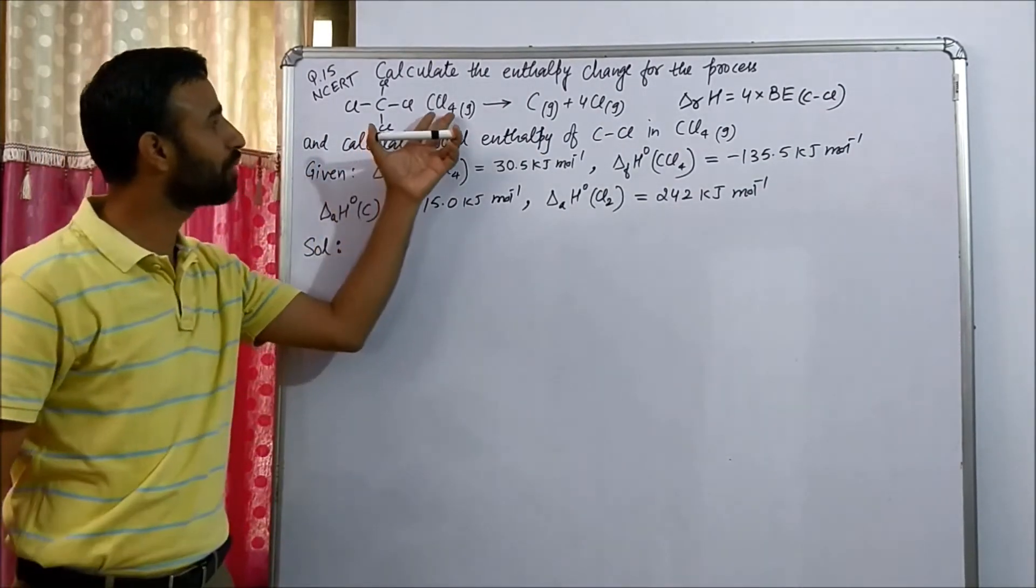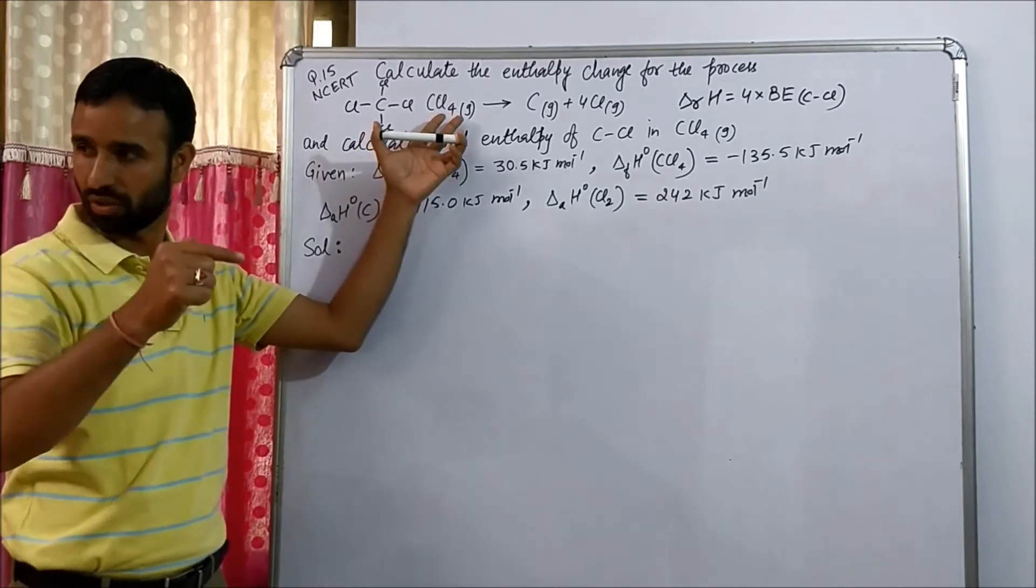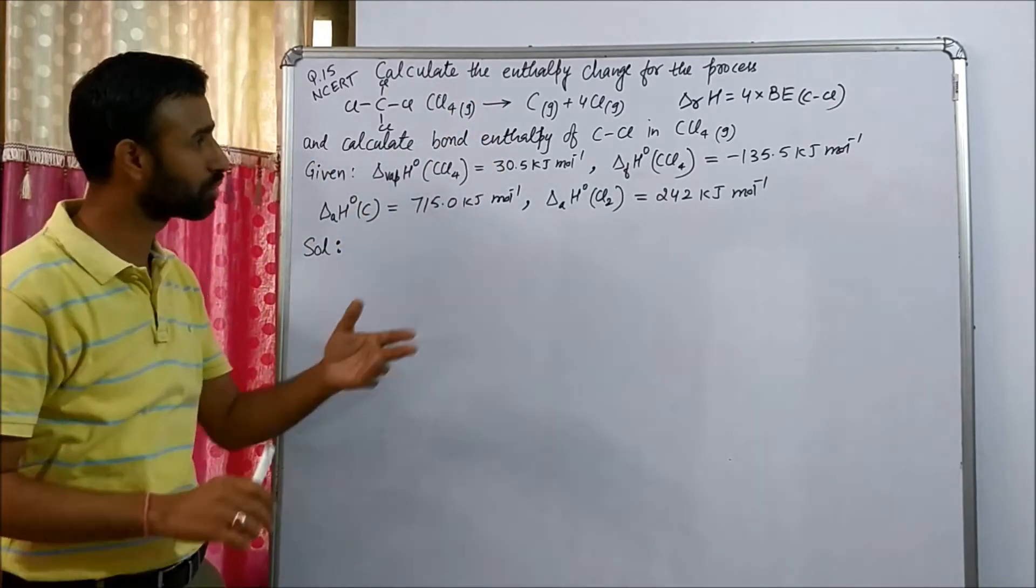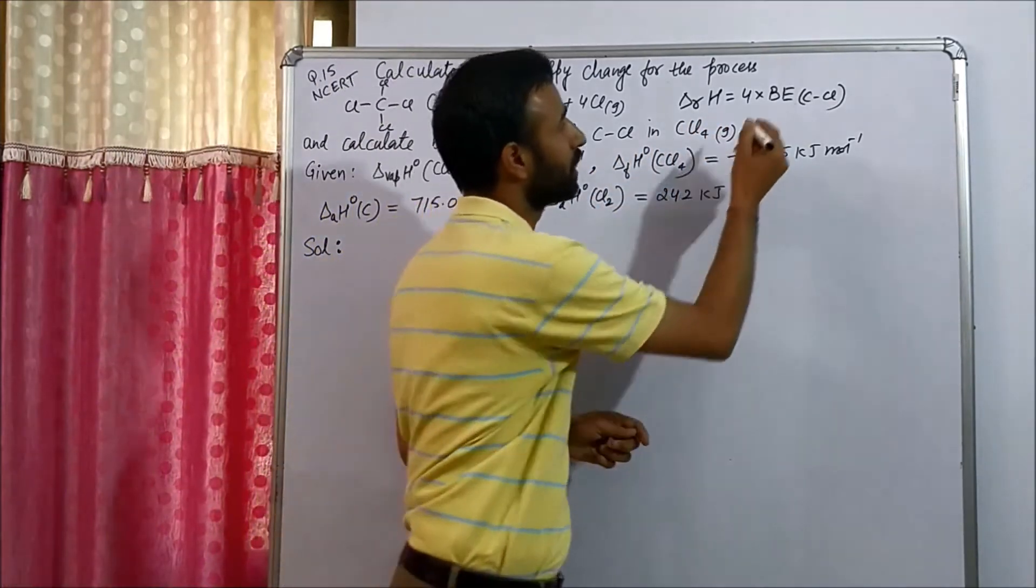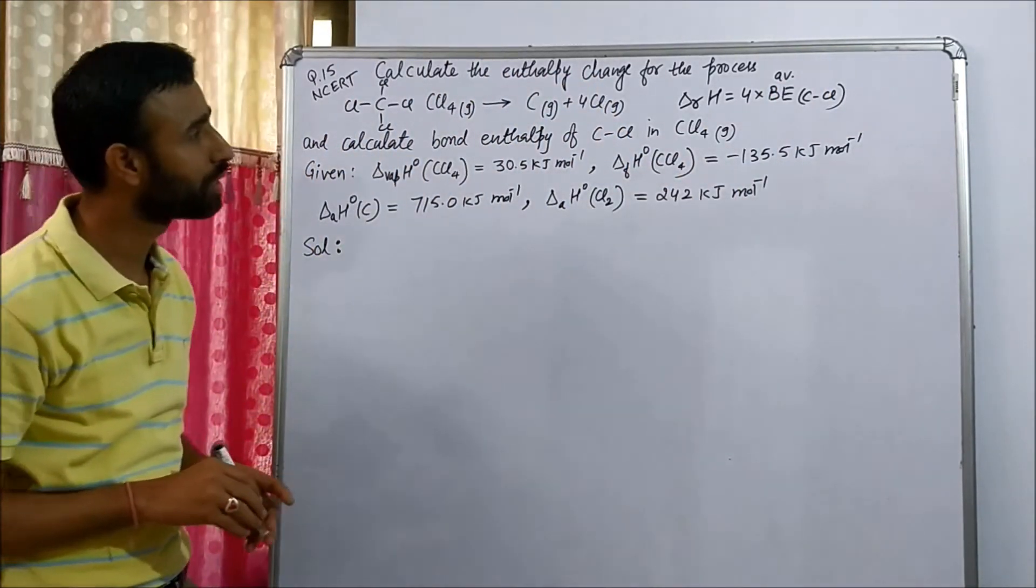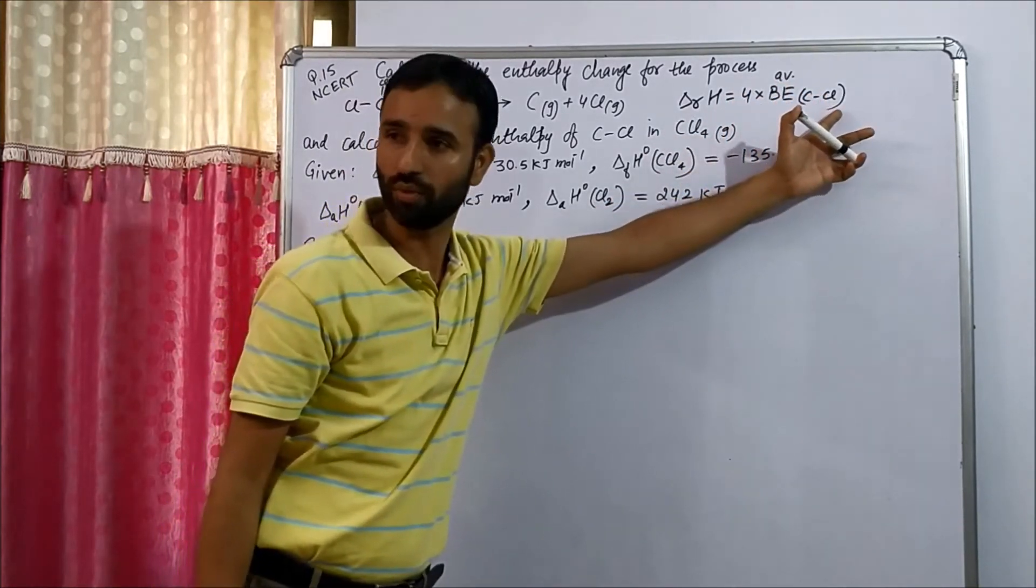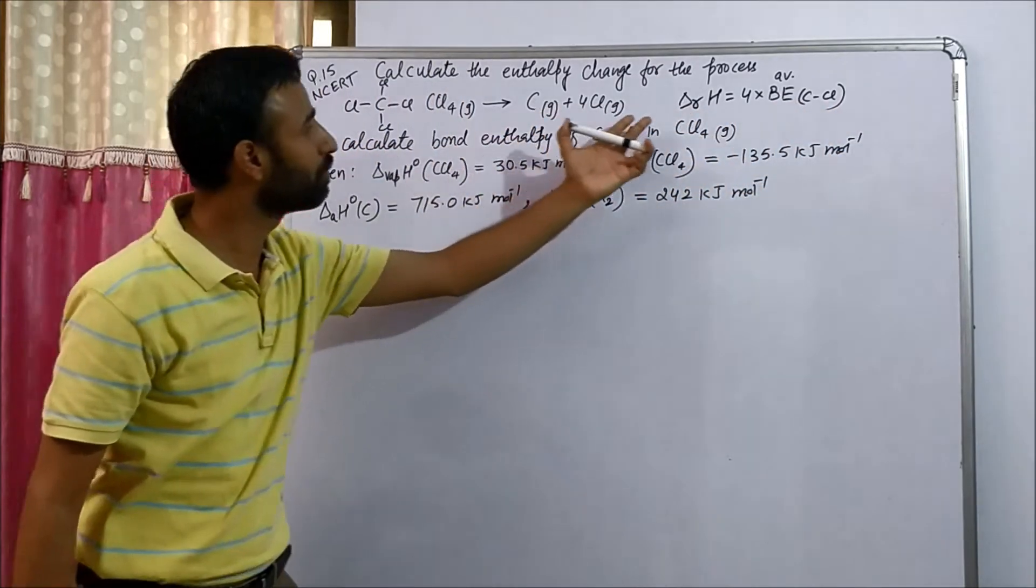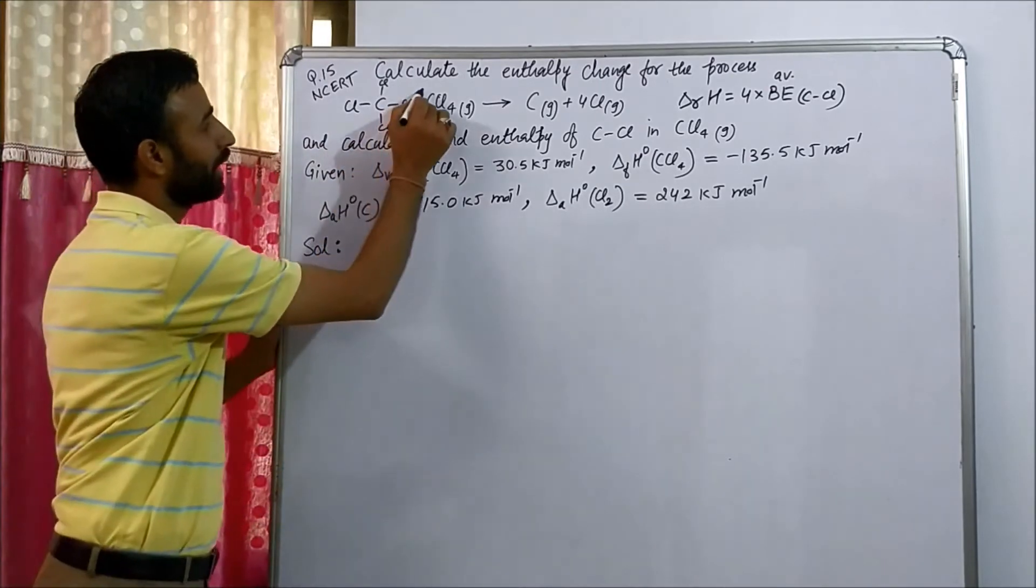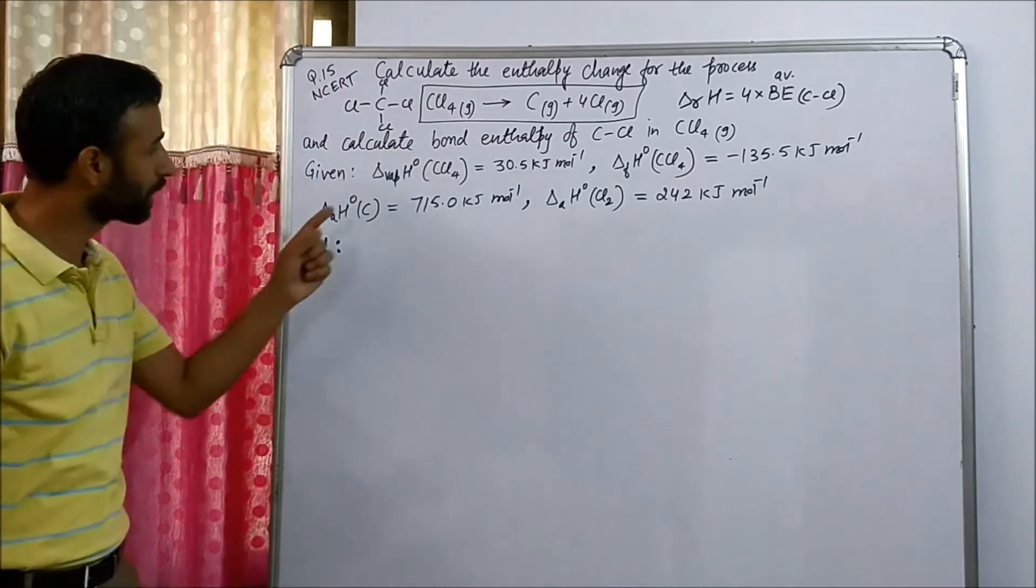Because when one C-Cl bond is broken, we get CCl3. Environment is changed. So enthalpy required to break the second bond is different. So actually this one is average bond enthalpy of C-Cl bond, four times average bond enthalpy of CCl4. That means to calculate average bond enthalpy of CCl4 bond, we have to divide enthalpy of reaction by four. So our aim is to get this equation from the given data.